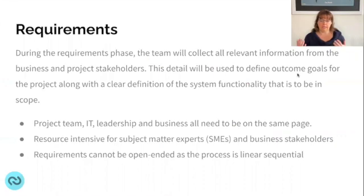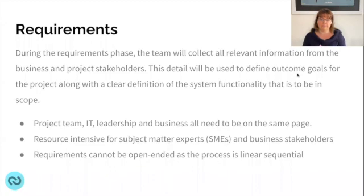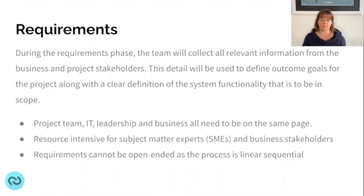In the requirements phase, you collect information from the business and all project stakeholders to define the outcome goals for the project. Have a clear documented intention and clarify what is in scope from both a functionality and purchasing perspective. Project leadership, IT, and business all need to be on the same page — misalignment at the start will cascade into problems later. The requirements must be concrete and defined, not open-ended; if you don't define them here, you'll struggle in the analysis and design phases.